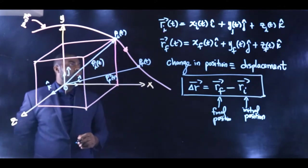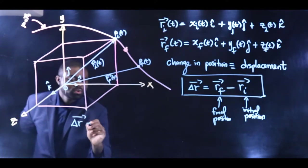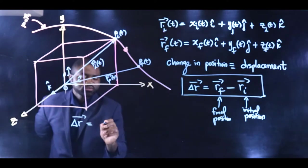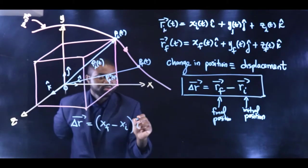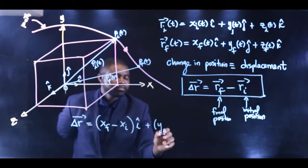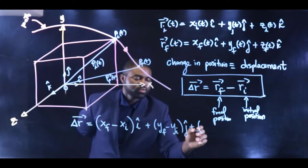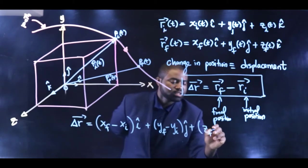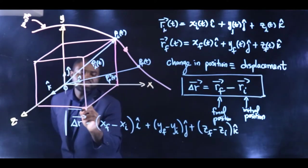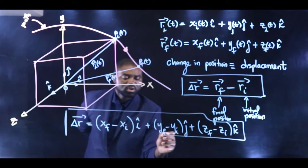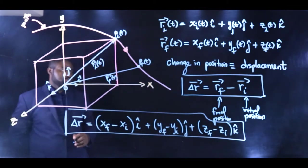What that means is ΔR will be equal to (Xf - Xi)I + (Yf - Yi)J + (Zf - Zi)K. This defines the displacement of the particle.